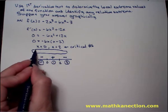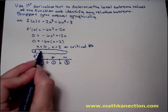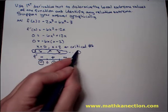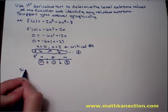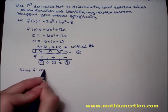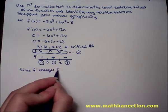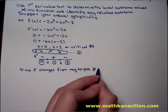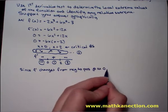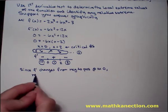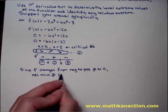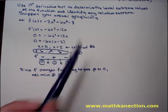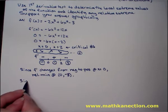Imagining the graph of f: since f prime was negative, then positive, then negative, the function is decreasing, then increasing, then decreasing. Since f prime changes from negative to positive at x = 0, there is a relative minimum at (0, f(0)). Getting the y-value by plugging 0 into the original function gives us the relative minimum at (0, -3).